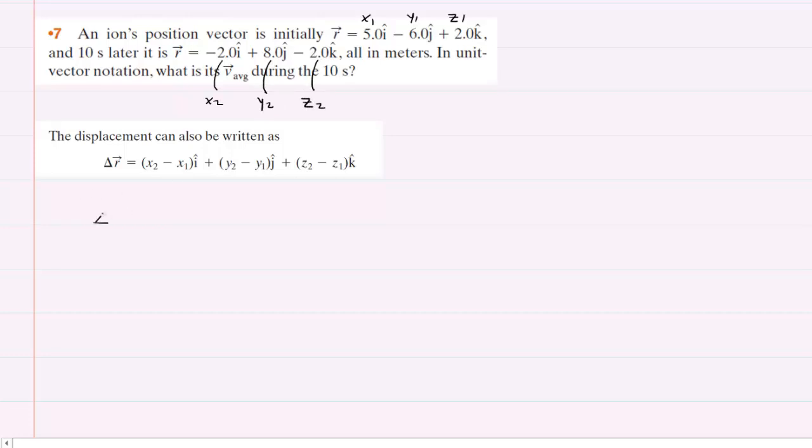So now we can find the displacement rather easily, again by obeying this equation. So we'll take our x2 and subtract x1, so we're going to have negative 2 minus 5, and this will be in the i-hat direction. Plus y2, which is 8, minus y1, which is negative 6, so be careful there. You're going to end up adding 8 and 6. And then z2, which is negative 2, minus z1, which is positive 2. And now we'll just simplify this and this will give us our displacement vector. So we'll have negative 7, and note that the position is measured in meters.